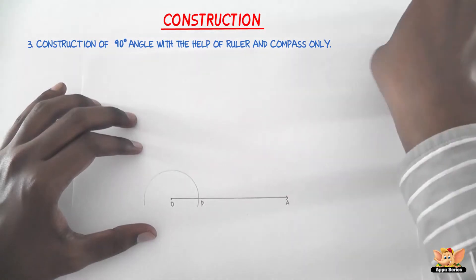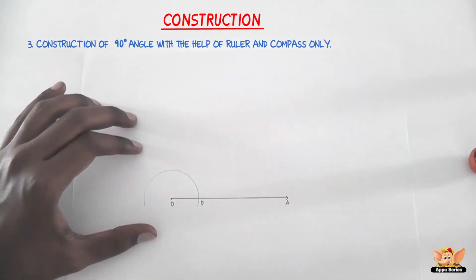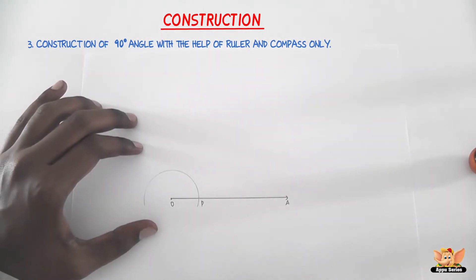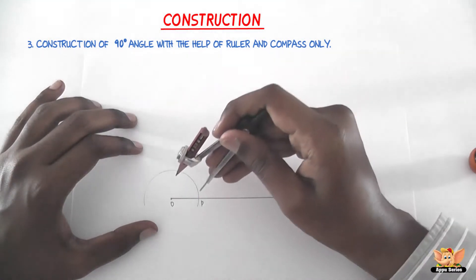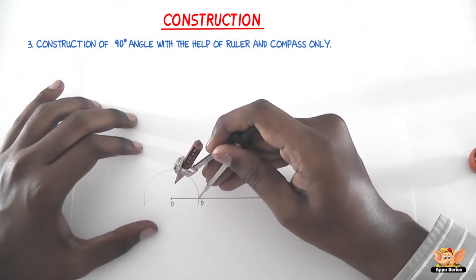The third step is with P as center and the same radius, draw an arc cutting the arc that we just drew at Q.